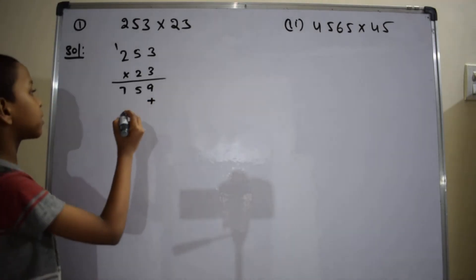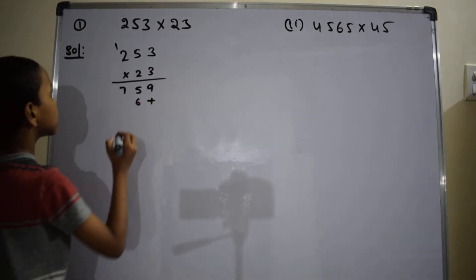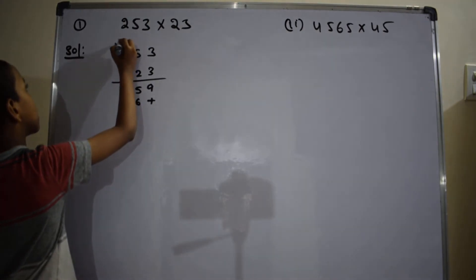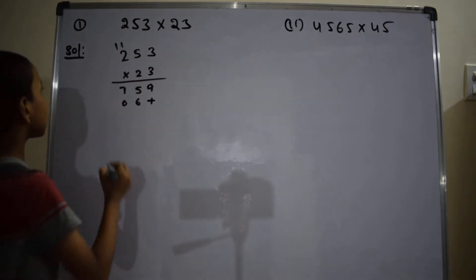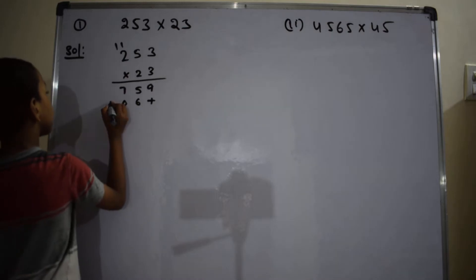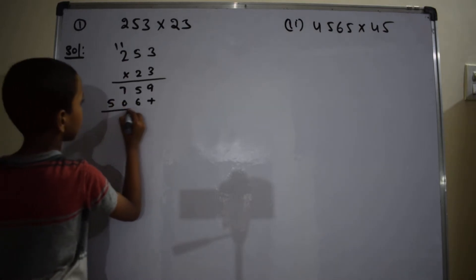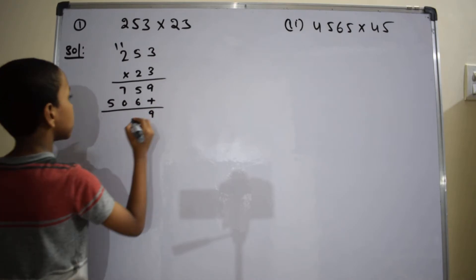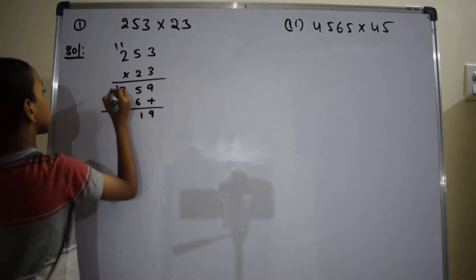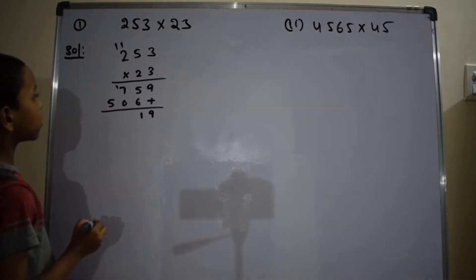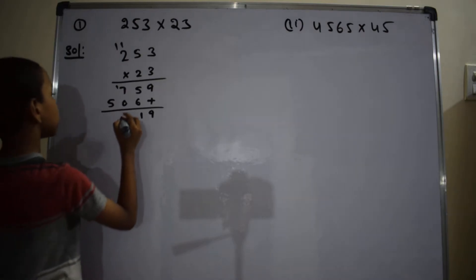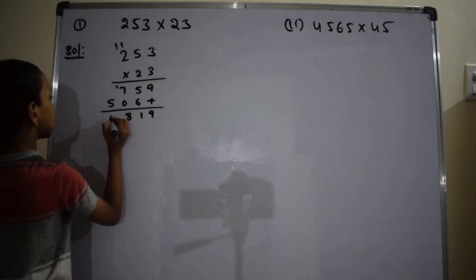2 into 3 equals 6. 2 into 5 equals 10. So right here 0, and 1 is carried to the 2. 2 into 2 equals 4. 4 plus 1 equals 5. Then 5 plus 6 equals 11. 7 plus 0 equals 7, 7 plus 1 equals 8. Here 5.